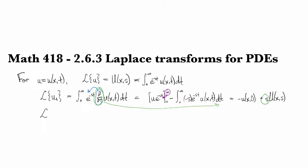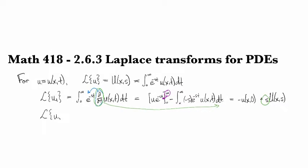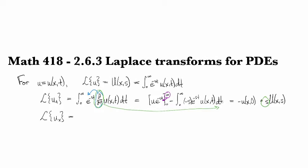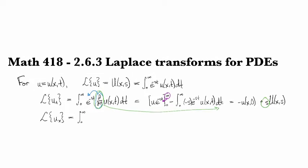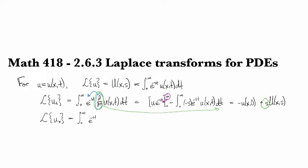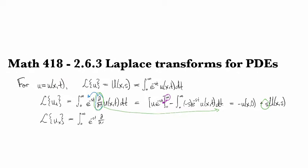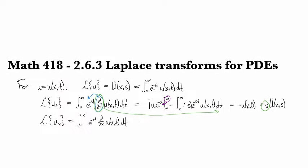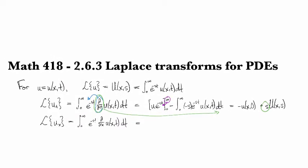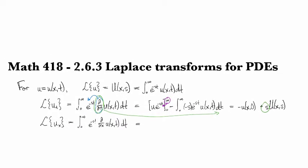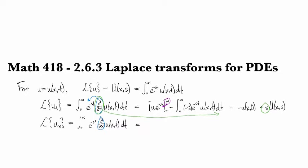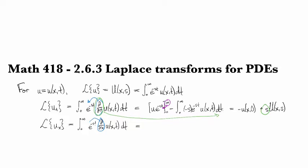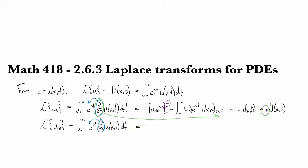However, if we do the Laplace transform of an x derivative, then we've got e to the minus st times d/dx u(x,t) dt. Then since the d/dx has nothing to do with t's, we can take it out in front of the e, and in fact we can take it out in front of the integral altogether.